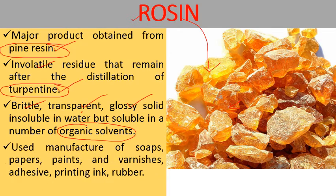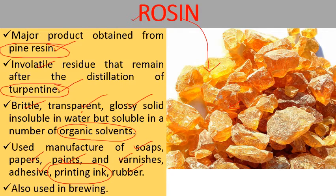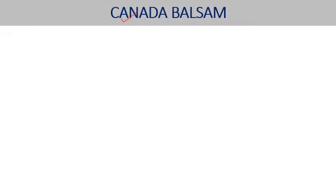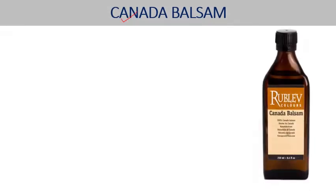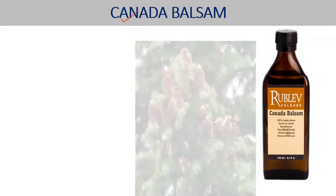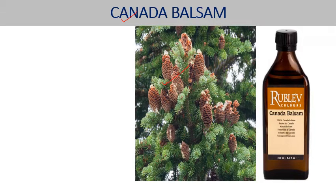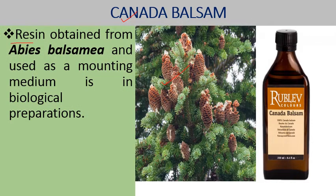Rosins are used for making soaps, papers, paints, varnishes, adhesives, printing ink, and rubber. One type of resin is Canada Balsam, used for mounting plant or animal material during the preparation of microscope slides. It is obtained from Abies balsamea and is a transparent, pale yellowish-green liquid used as an adhesive and mounting medium in biological preparations.